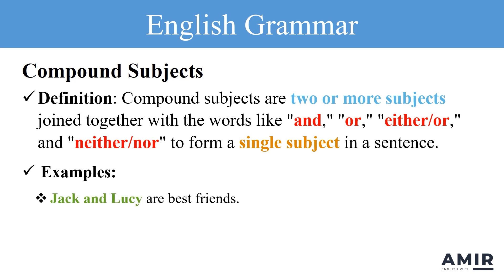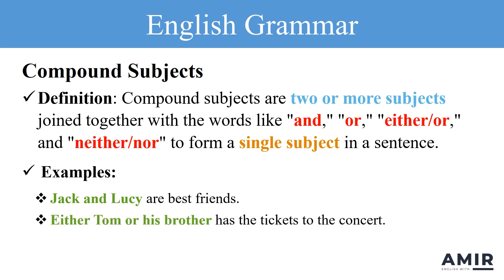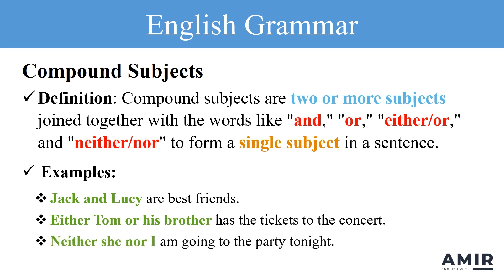Jack and Lucy are best friends. In this sentence, the compound subject is Jack and Lucy. Either Tom or his brother has the tickets to the concert. Here, either Tom or his brother is the compound subject. In the initial question, neither she nor I is the compound subject.